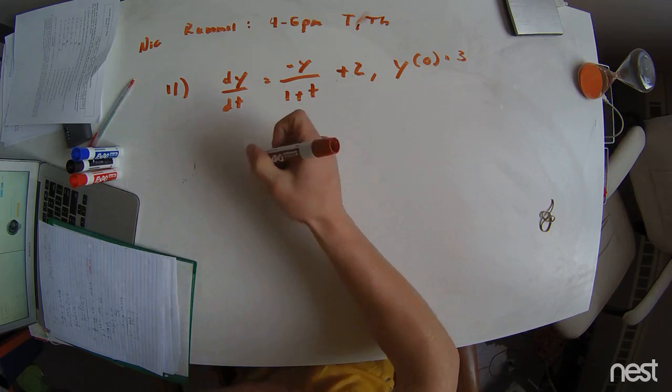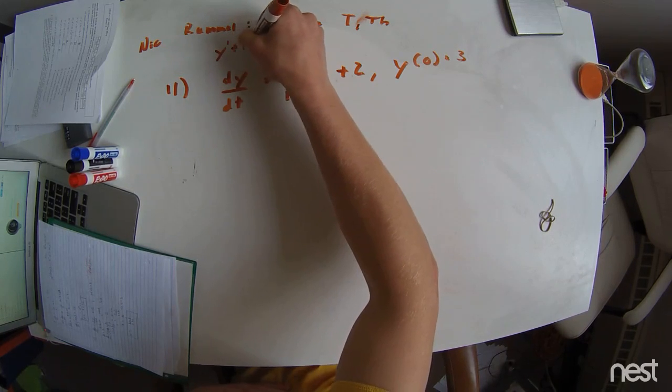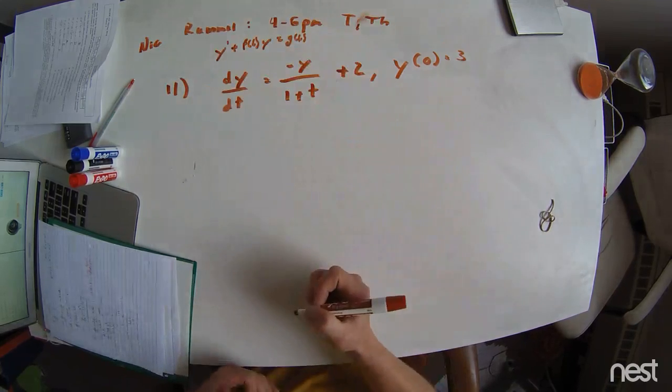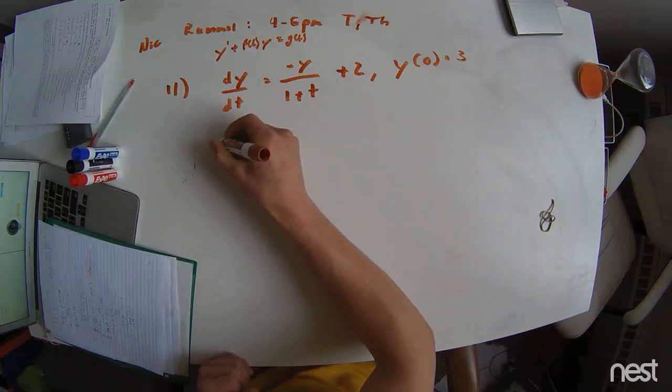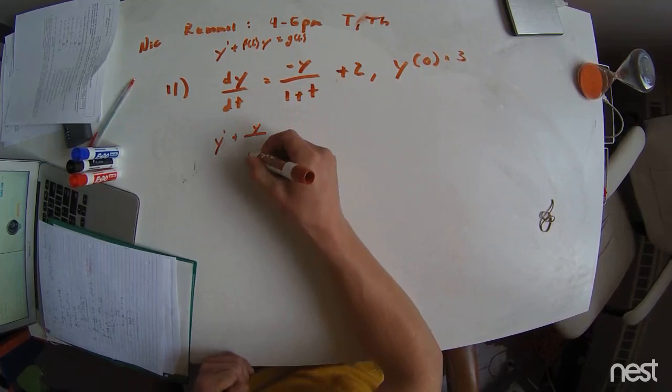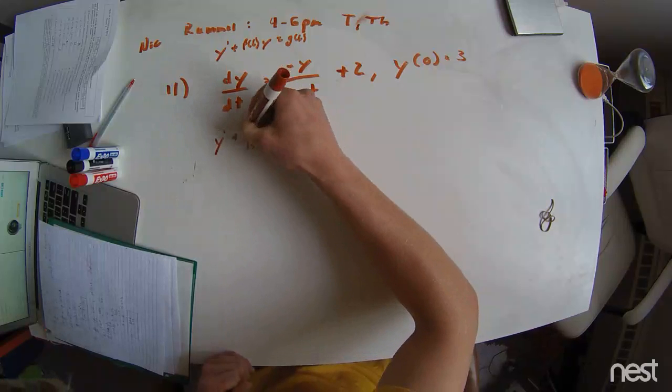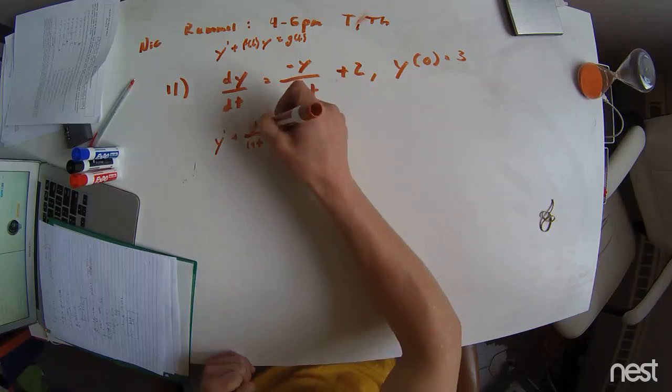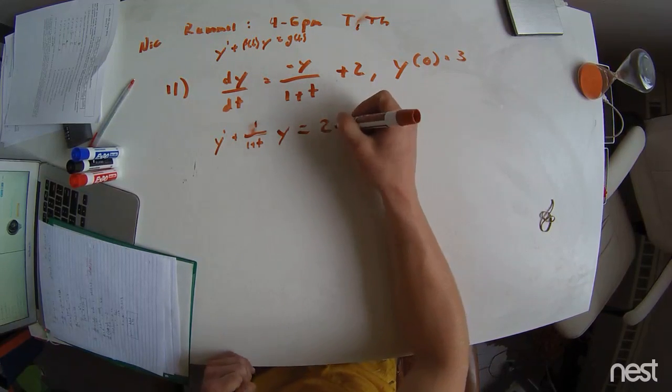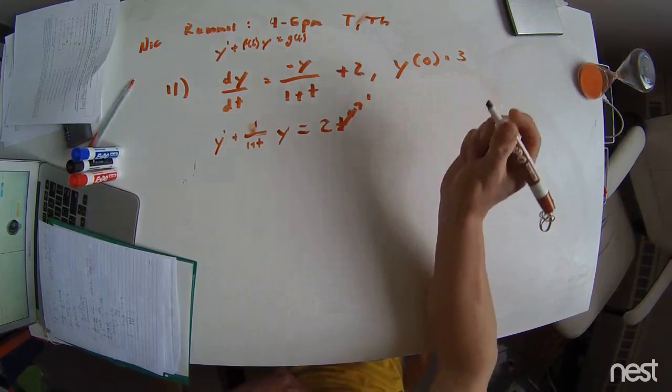The way that we see this is integrating factor usually takes the form of y prime plus some function of t times y equals another function of t. The first step that we're going to take here is I'm just going to rearrange it so we can see it a little better. This is y prime plus y over 1 plus t, and we can even rewrite that. This is our f of t, and then this equals just 2. That's our g of t. But the t term is like t to the 0, which then goes to 1.